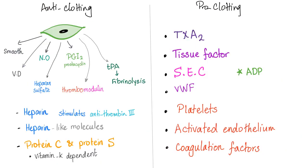Anti-clotting versus pro-clotting. Let's start with the smooth endothelium. It's smooth — if it's smooth, the platelets cannot adhere, so clots cannot occur. Next, it vasodilates. It secretes nitric oxide, which vasodilates and inhibits platelet aggregation.